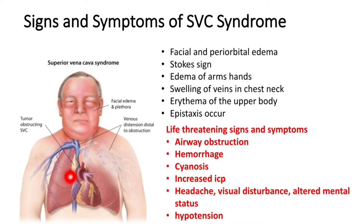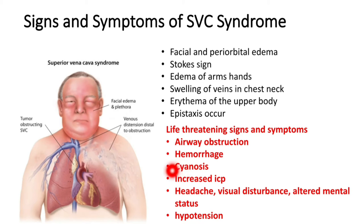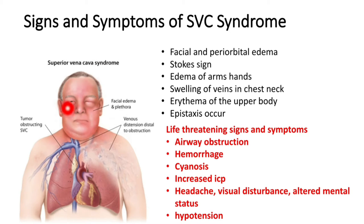However, it can become life-threatening if the tumor is left untreated, as it can cause airway obstruction by invading the trachea. When the tumor grows into the trachea, it can cause airway obstruction leading to cardiorespiratory arrest. Another complication is hemorrhage. Additionally, there is cyanosis — too much deoxygenated blood held back leads to decreased oxygen supply to the tissues.